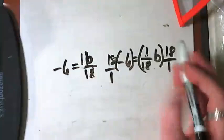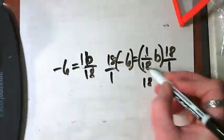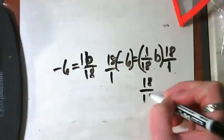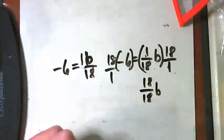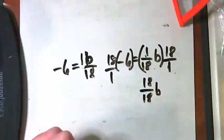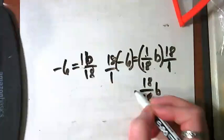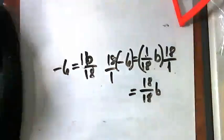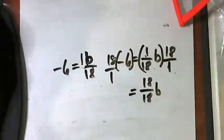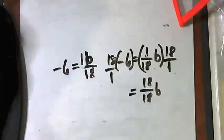This times this gives me 18 and this times this gives me 18B. I'm just trying to make everything visible. 18 times 6. I don't know it off the top of my head.